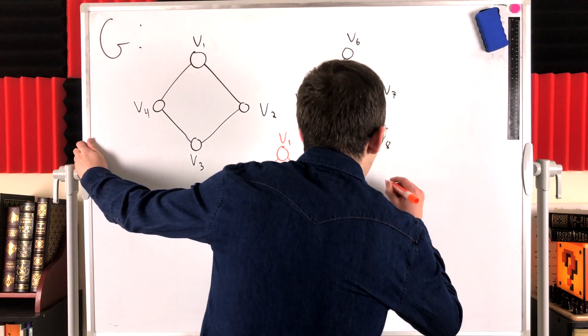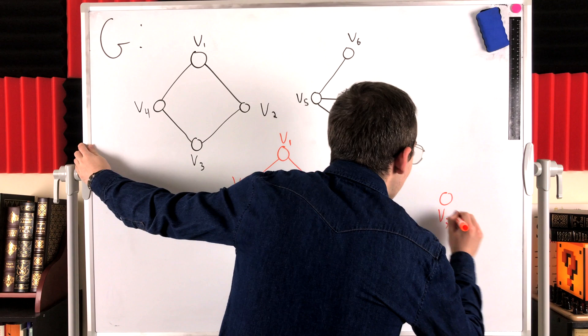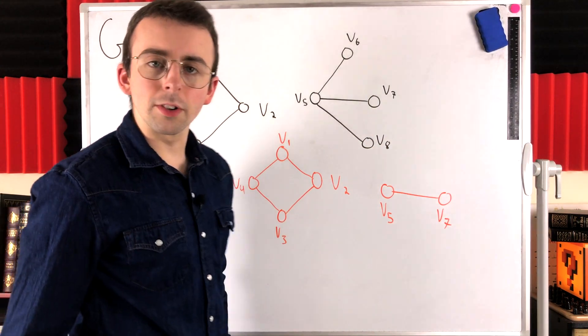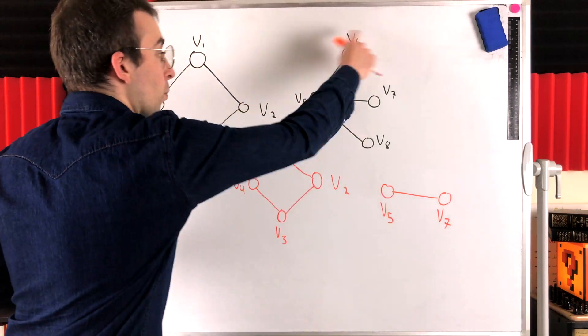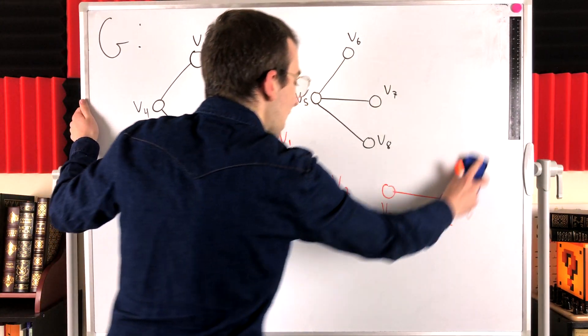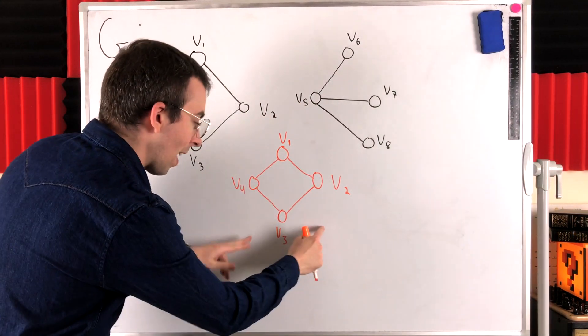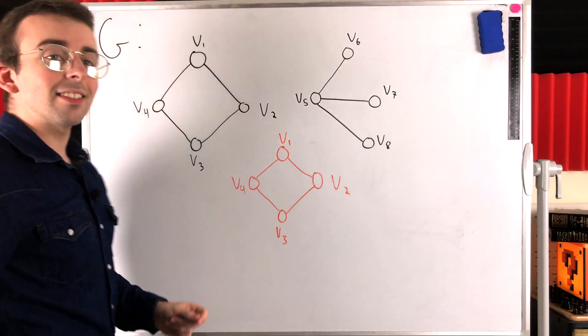For example, maybe we add the vertices V5, V7, and the edge that joins them. Okay, now we've got a subgraph with more vertices and edges, but it's no longer connected. And of course, no matter which of these vertices and edges we add, we would get a disconnected subgraph. So that's why this is a maximal connected subgraph of G and thus is a component.